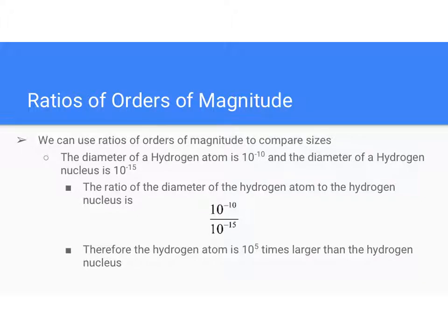So that's what we're kind of getting at with this idea of orders of magnitude. And then the last thing here is looking at ratios of orders of magnitude, and this is so that we can compare things. One of the real common questions I've seen a lot discusses the ratio of the diameter of a hydrogen atom to the actual hydrogen nucleus.